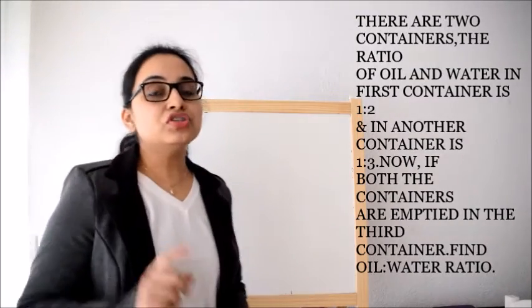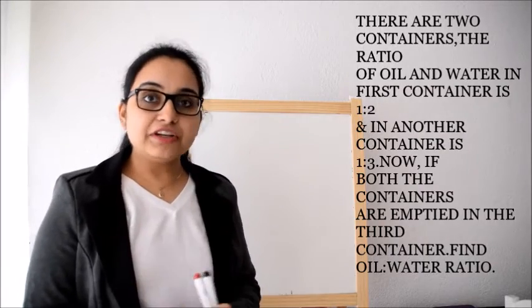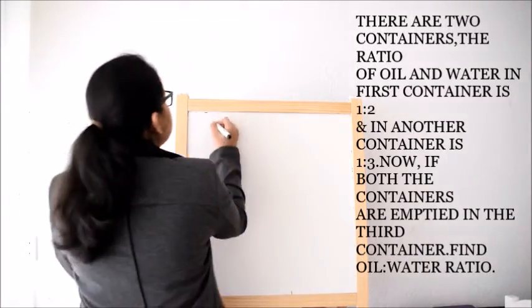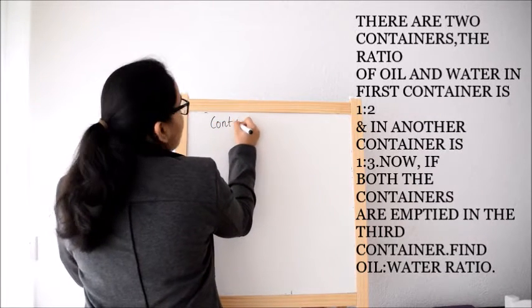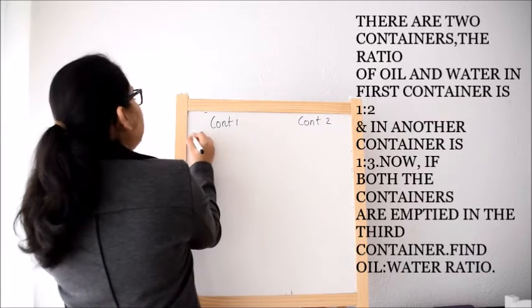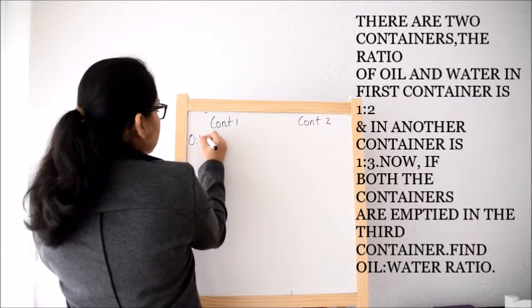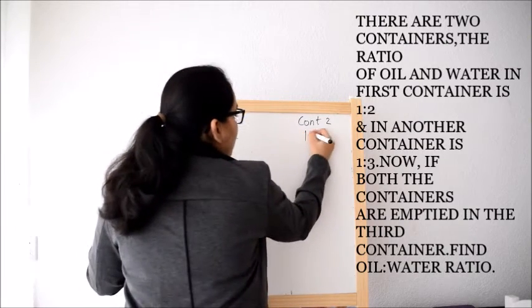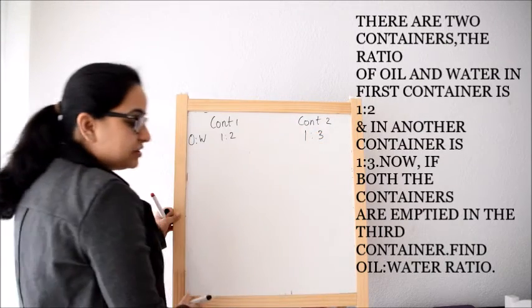I am going to solve this by two methods. We will derive conclusion after solving this. So what the question says? It says that there is container 1 and there is container 2, and oil is to water ratio is 1 is to 2 in container 1 and 1 is to 3 in container 2.